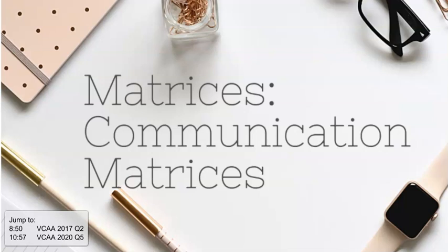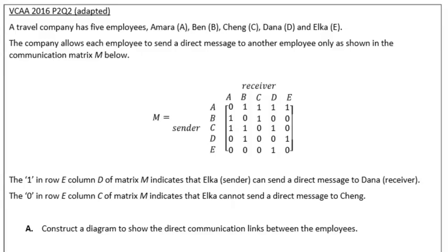This video is going through a couple of application questions for communication matrices from our notes. This first example here is an adapted exam question, mostly the same as what appeared in exam two in 2016. A travel company has five employees: Amara, Ben, Cheng, Dana, and Elka, and the company allows each employee to send a direct message to another employee only as shown in the communication matrix below.